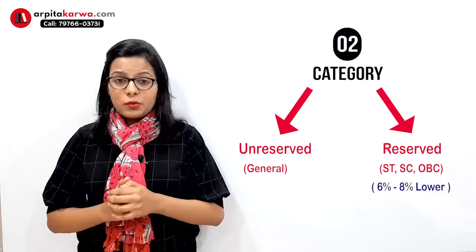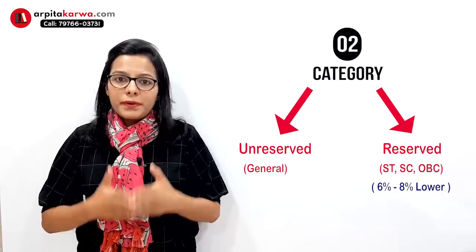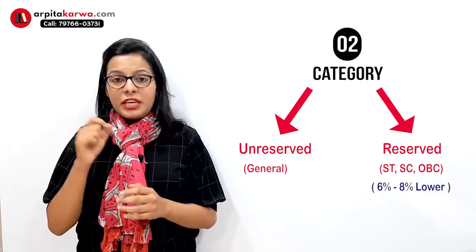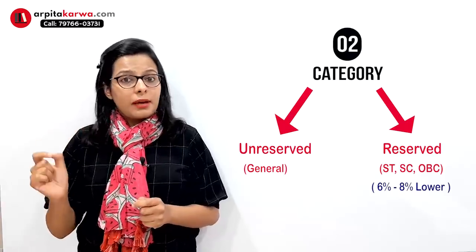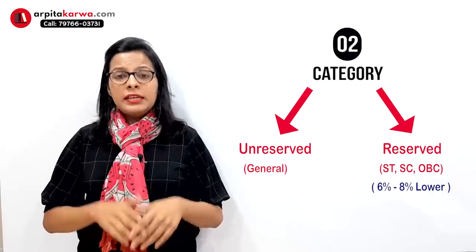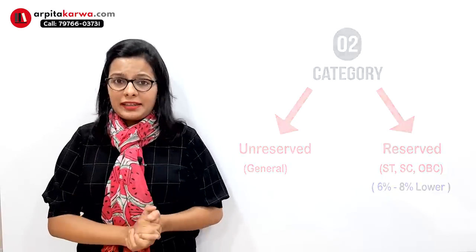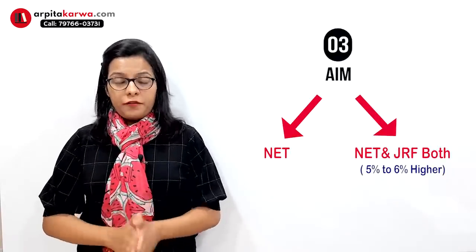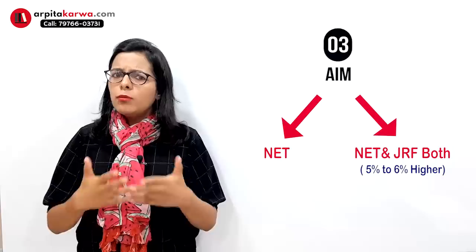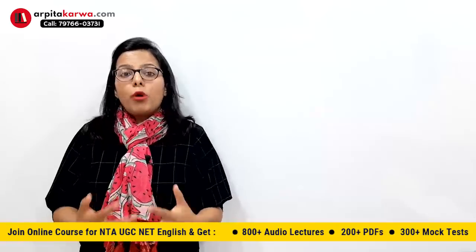Regarding the category factor: if you are a reserved category student, you have a slight advantage — your passing percentage would be about six to eight percent lower than the general category. For example, if a general category student clears NET at 54 percent, a reserved category student may clear it at around 47 to 48 percent. For JRF, the cutoff is five to six percent higher than the NET cutoff for almost all subjects.